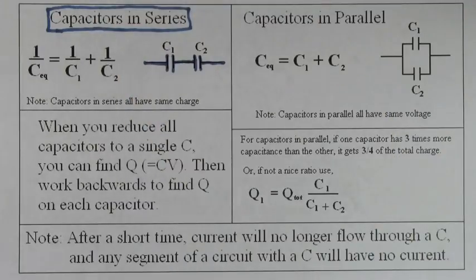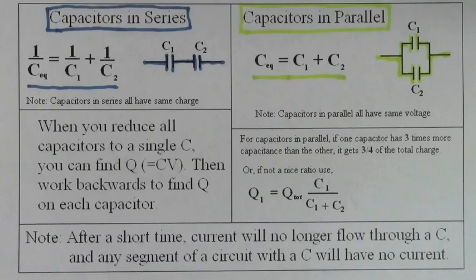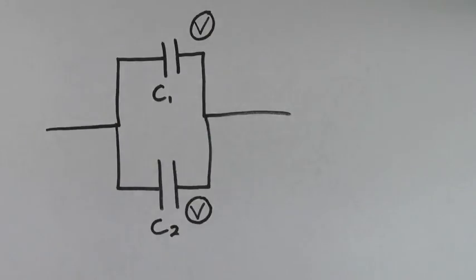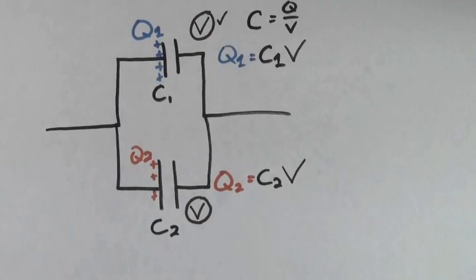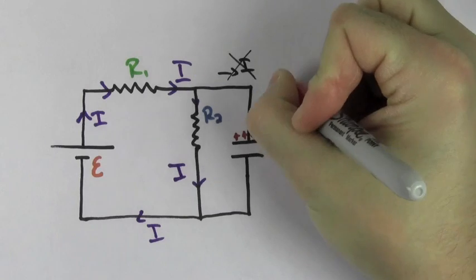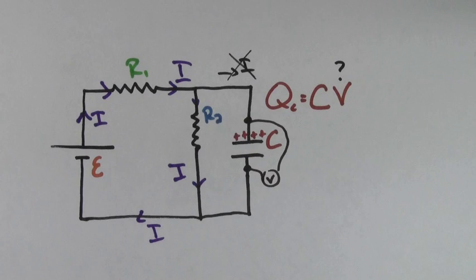The rules for finding the total capacitance are reversed compared to the rules for finding the total resistance. Capacitors in series always have the same charge, and capacitors in parallel always have the same voltage because everything in parallel has the same voltage. If you have two different capacitors at the same voltage, you can find the charge on each capacitor by multiplying the capacitance by V. If you have a circuit with resistors and capacitors, the capacitor makes it so no current flows through that leg of the circuit. You can find the charge on the capacitor by using the formula C times V, but V here is not the voltage of the battery — it's the voltage across the capacitor.